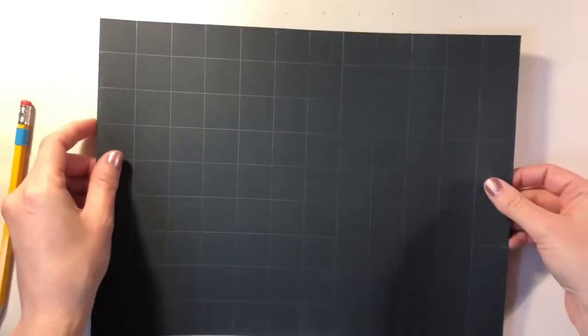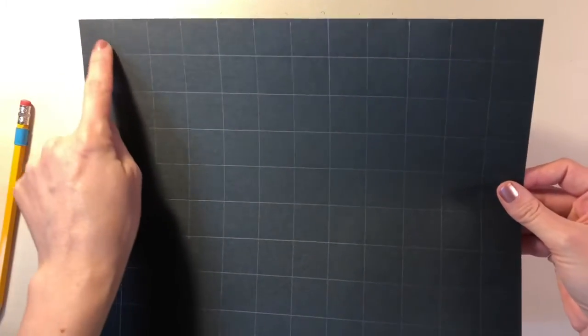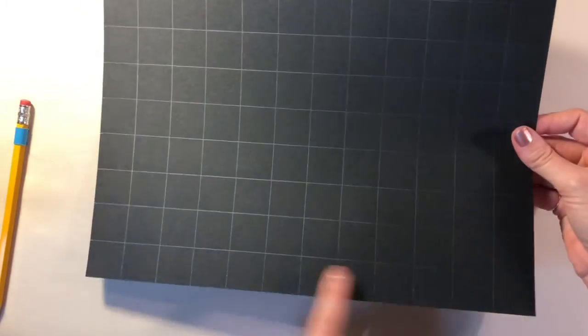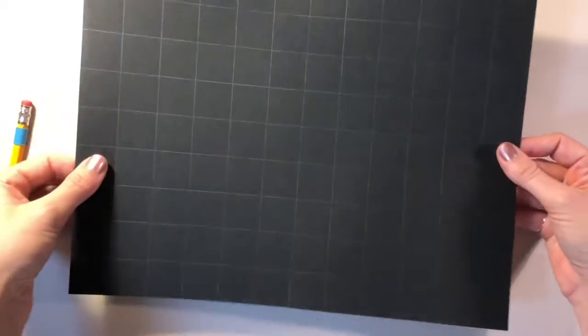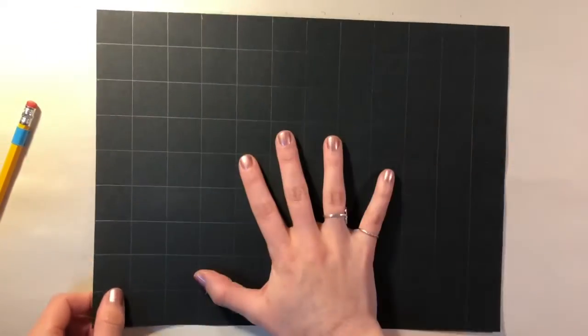We're going to be placing a 1-inch grid all the way across this piece of paper, so you can see it here. I've already done it on this black paper so you can see it, but I'm going to demonstrate what you're going to be doing today.